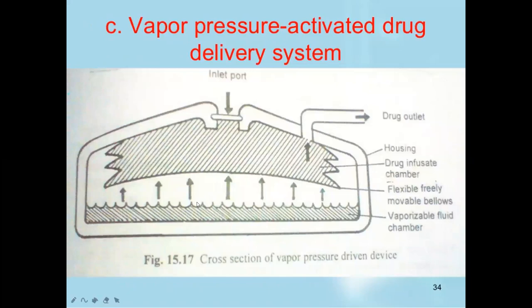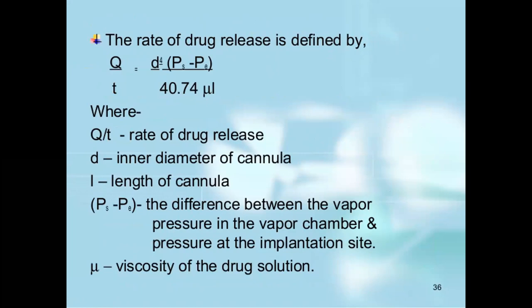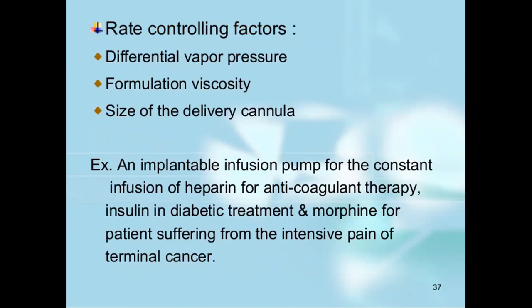The vaporizable fluid chamber creates vapors, which press the drug chamber and push the drug out. The rate of drug release is calculated as Q/T, where T is the inner diameter of the cannula, L is the length of the cannula, and P is the difference between the vapor pressure in the vapor chamber and the pressure at the implantation site. Eta is the viscosity of the drug solution. Rate-controlling factors are differential vapor pressure, formulation viscosity, and size of the delivery cannula. Examples include implantable infusion pumps for heparin in anticoagulant therapy, insulin in diabetic treatment, and morphine for patients with terminal cancer pain.